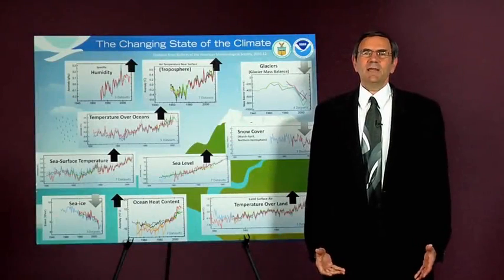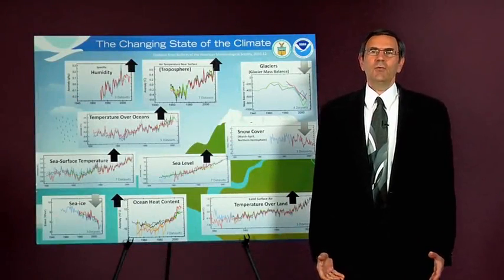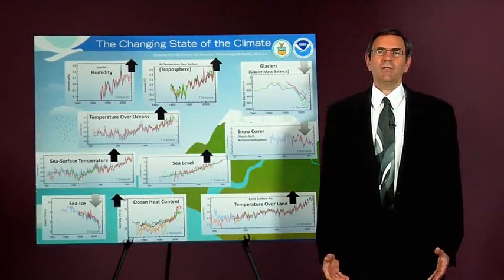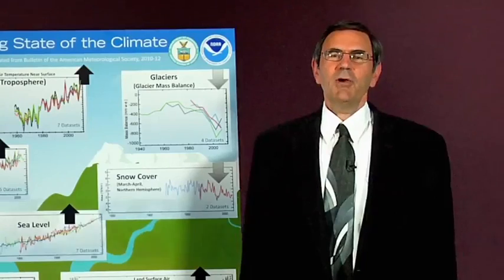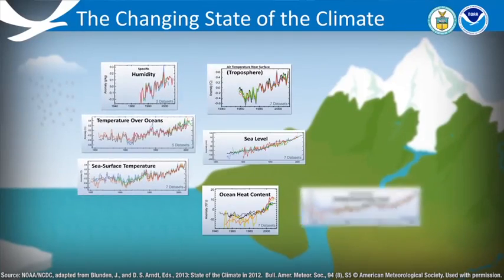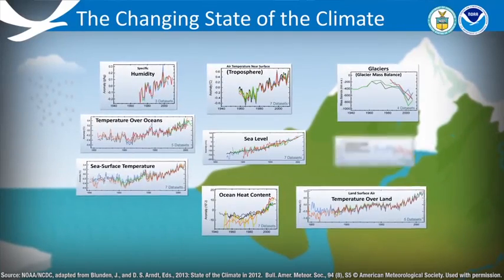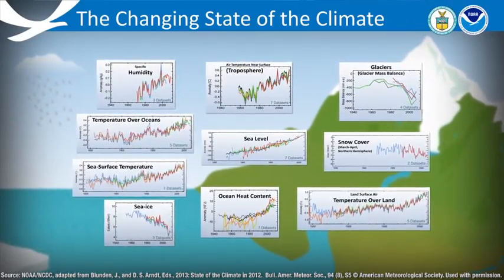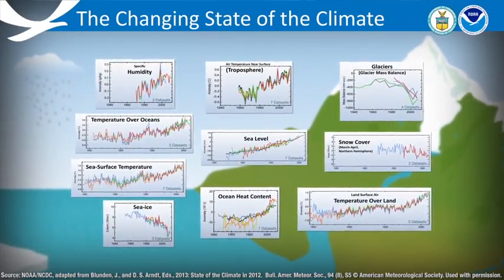One of the things that scientists do when they try to look at changes in the global climate system is they try to look at a number of different measures to see if they're getting a consistent picture of change. So on this first slide, we have a series of indicators looking at changes in the global climate system.